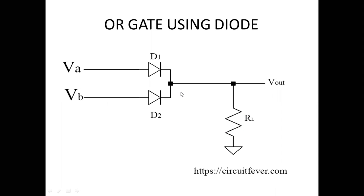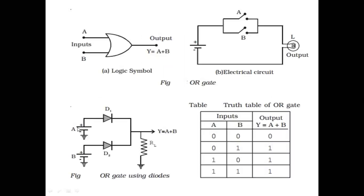The second diagram implements OR gate using diodes. OR gate has two inputs; diodes D1 and D2 are used with load resistance, giving Vout. The truth table is the same — four conditions with the same output. The concept is the same whether using switch diagram or diode diagram.